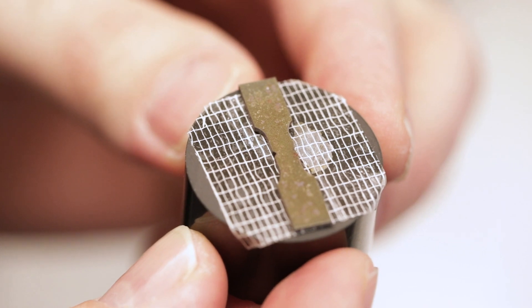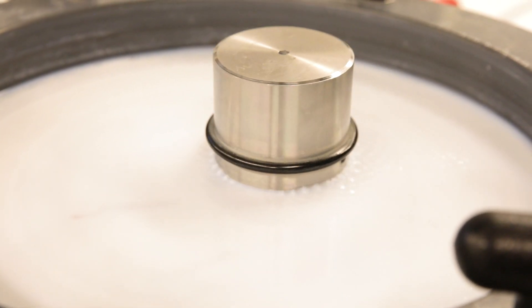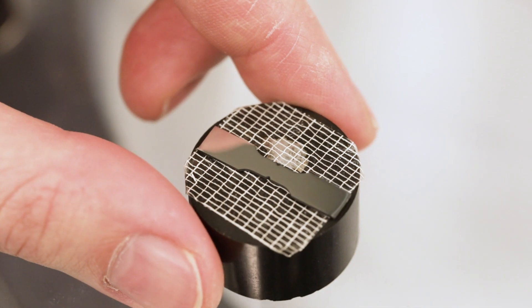Specimen surfaces are polished, finishing with 0.02 micrometer colloidal silica vibratory polishing, that is required for electron backscatter diffraction analysis.